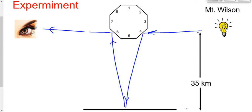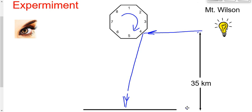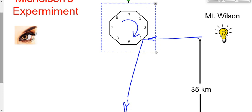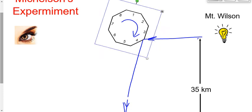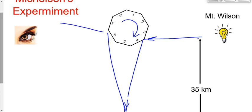But now, if I start turning this mirror — start rotating it — let's say this beam of light just happened to hit side four and reflect down like this. During the time that it takes the light to go from side four back to side six and then go to the observer, this mirror has rotated. So maybe side six isn't where it was anymore. The light has gone down to Mount San Antonio, gets reflected back, hits side six, and then goes somewhere else. It never gets observed by the observer.